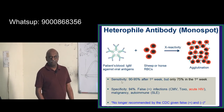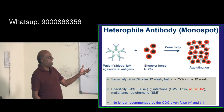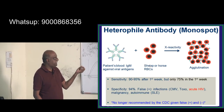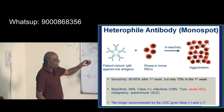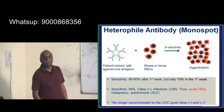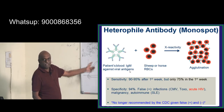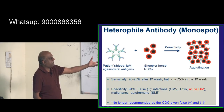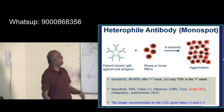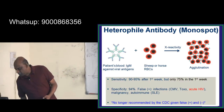Paul Bunnell is called a heterophile antibody test. The patient's blood contains IgM antibodies against the viral antigen. When you mix that blood with the RBCs of sheep or horse, the antigen sits on those RBCs. The IgM antibodies from the patient's plasma then bind to the sheep or horse RBCs, leading to agglutination — this is the heterophile antibody test, and Paul Bunnell is the classic example.